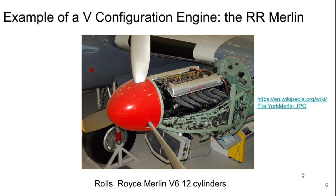Here's an example of a V configuration engine in an aircraft — the Rolls-Royce Merlin engine, a World War II-era engine with a 12-cylinder V configuration. If you look inside, it doesn't look too different from a car engine. We'll talk later today about some of the important differences in aerospace engines compared to those used in the automotive industry or other land-based applications, but notionally it's not dramatically different looking.